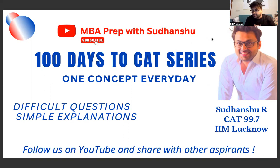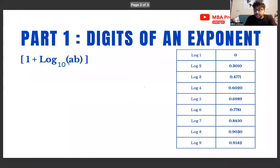Let's start with the first concept which is very interesting - the number of digits in an exponent. For people who don't know this concept, it's going to be very amazing and very important from a CAT standpoint. Let's have a look.